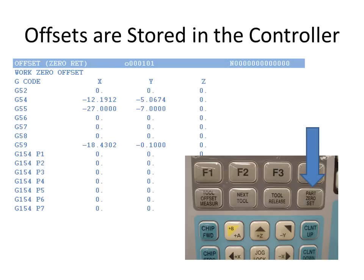These are stored inside the controller of the machine. Usually you push a button like the offset button to access the screen where they're stored. On this particular machine, you use part zero set to record the position in the X or Y axis and sometimes the Z. That records how far your coordinate system is from the machine coordinate system.